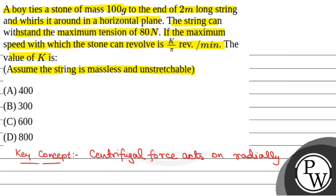So centrifugal force acts radially outwards and Fc, that is centrifugal force, is equal to m v squared by r, or this is equal to m omega squared r.